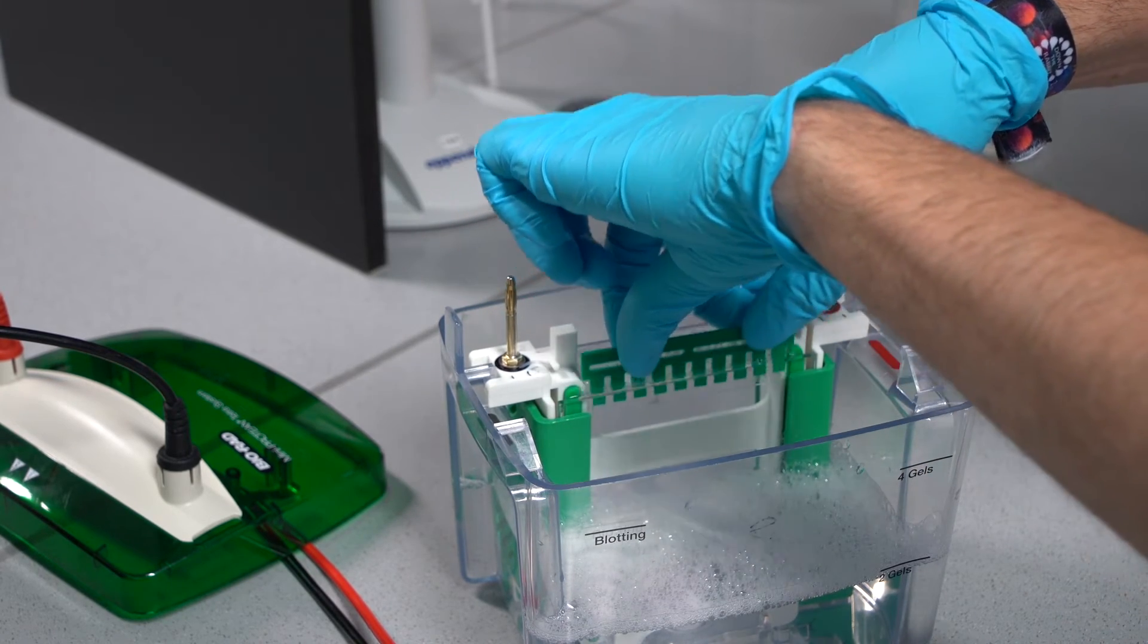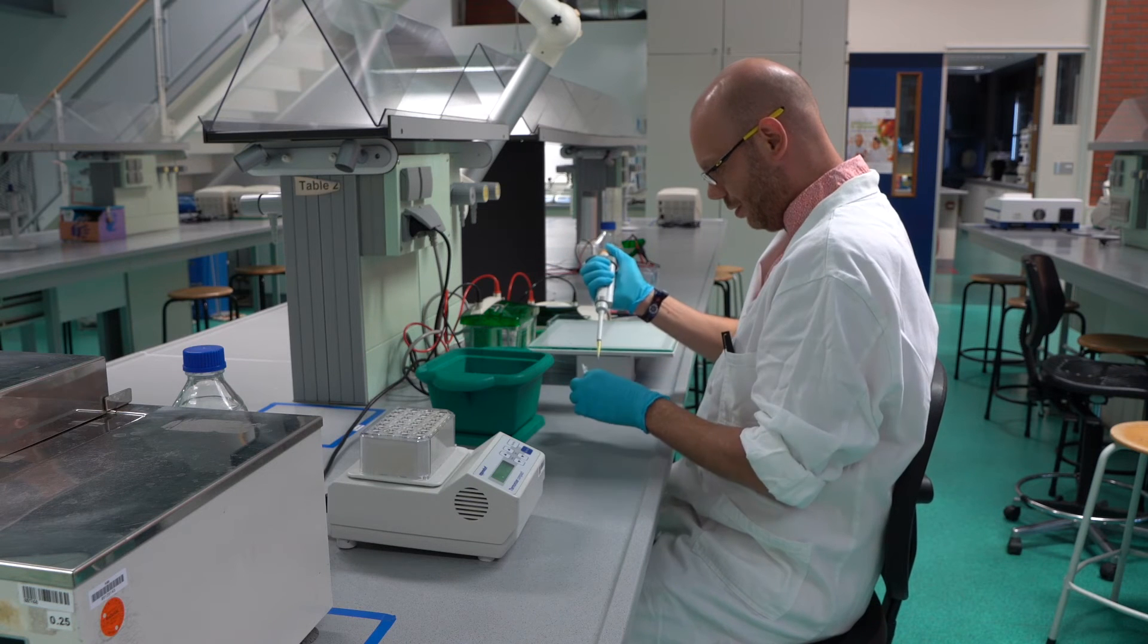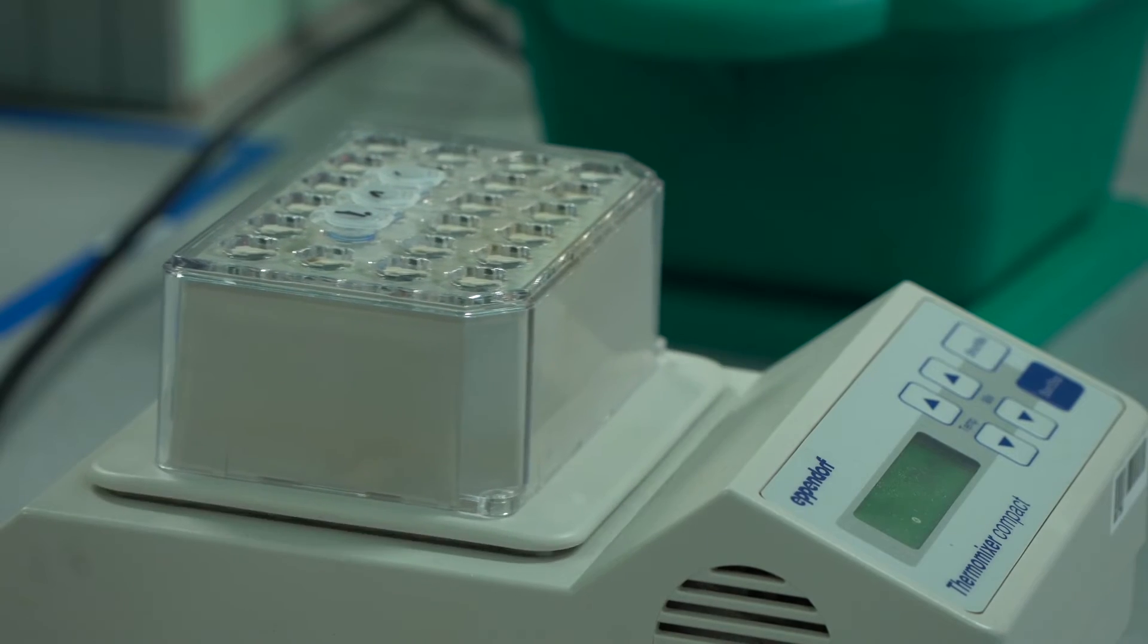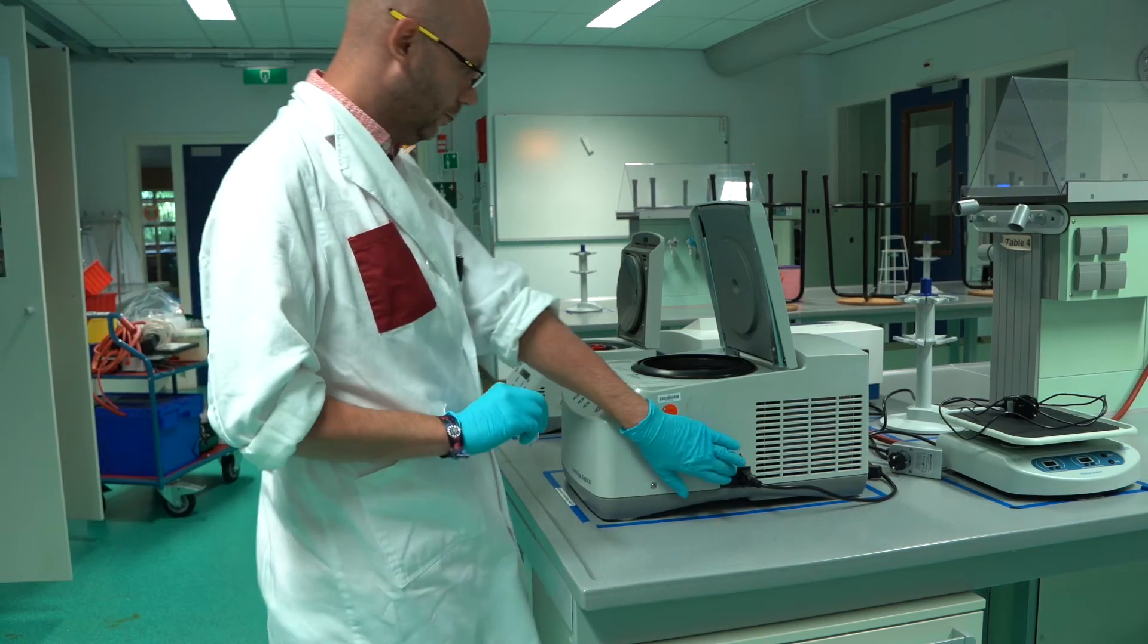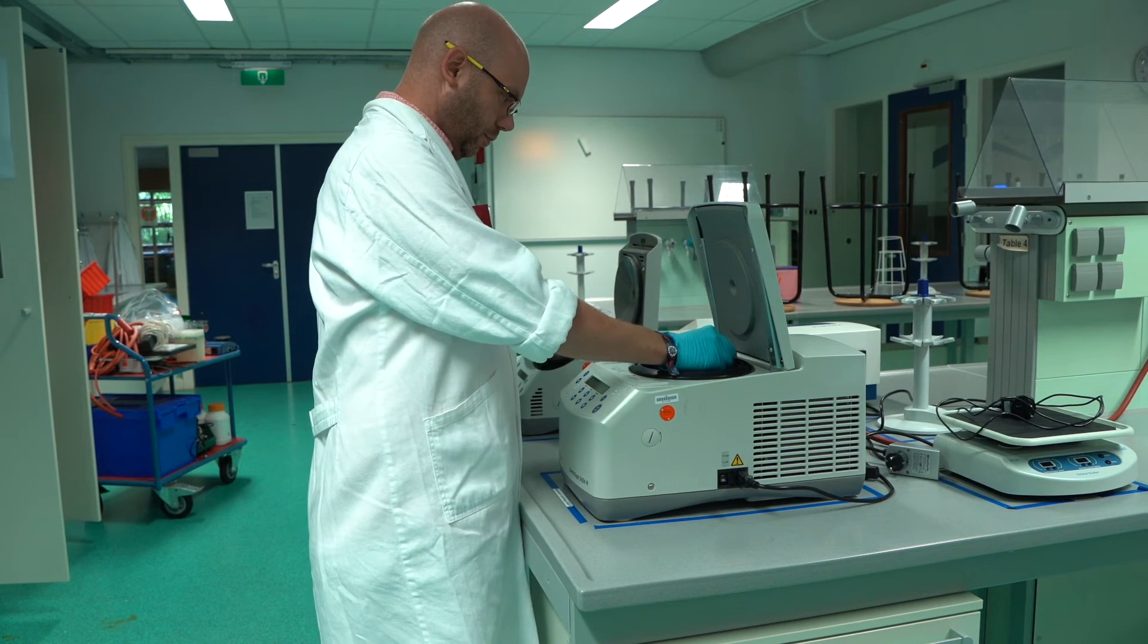Carefully remove the comb from the gel. To prepare the samples, boil them for 5 minutes at 95 degrees C in the sample buffer. You can use a heating block for this. After heating, spin briefly by means of a short spin at 14,000 RPM in a centrifuge.